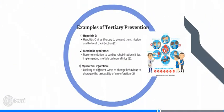Examples of tertiary prevention include interventions for individuals and populations dealing with infectious diseases. For hepatitis C, this involves antiviral therapy to prevent transmission and treat the infection, as well as ensuring that high-risk sites are closely controlled. Secondly, interventions for metabolic syndrome involve referrals to cardiac rehabilitation clinics and implementing multidisciplinary clinics. Lastly, cardiac rehabilitation after a myocardial infarction involves exploring different ways to change behaviors to reduce the chances of re-infarction.